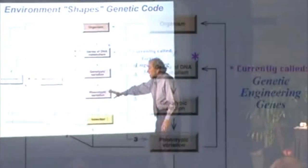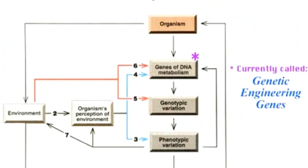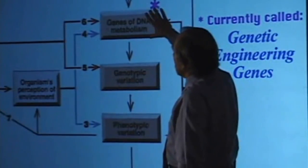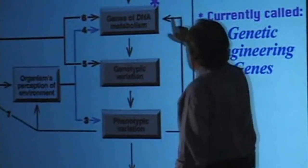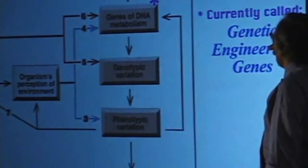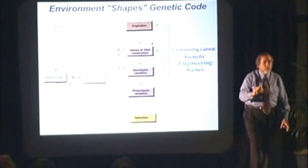This chart out of Science is about Cairns' work on genetic changing. I marked this one with an asterisk, because when this article came out, this box was called genes of DNA metabolism. There's now a new name — they're called genetic engineering genes. We have now found out that in every one of your cells, you have genes whose function it is to rewrite the other genes when necessary. You are all equipped with an ability to adapt and change your genes as you respond to the environment.